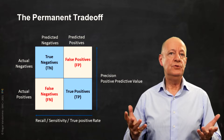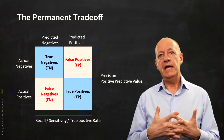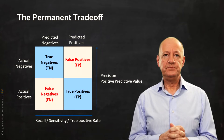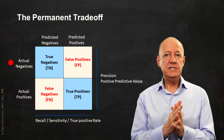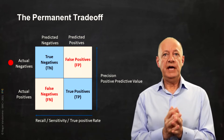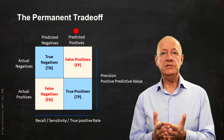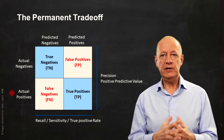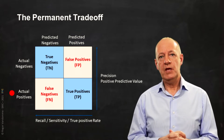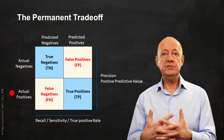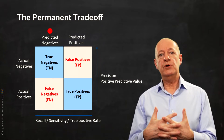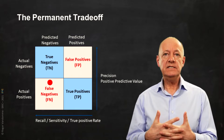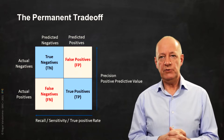Unfortunately, no model is perfect, and our model will make mistakes — errors. If the reality is negative and the prediction of our model is positive, we have a false positive, or a type 1 error. If the reality is positive and the prediction of our model is negative, we have a false negative, or a type 2 error.